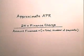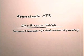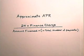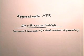Now let's approximate the annual percentage rate using the formula. To approximate the annual percentage rate, we have: 24 times the finance charge, divided by the amount financed times the quantity 1 plus the total number of payments. Now let's use this formula to do an exercise.